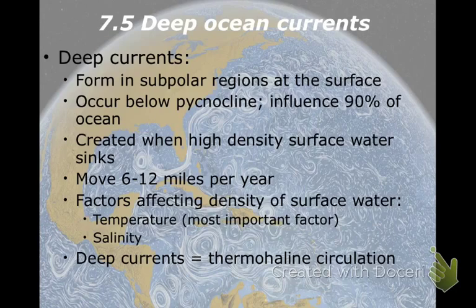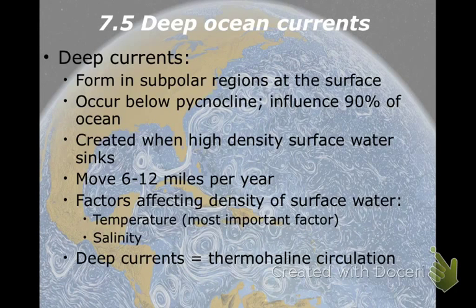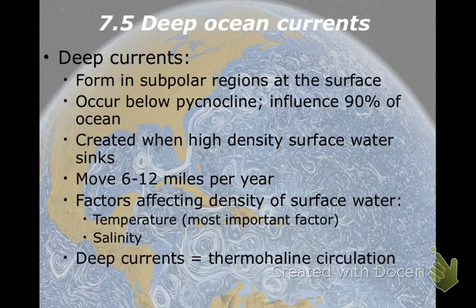Deep currents mostly occur in the subpolar regions of the North Atlantic and all around Antarctica. We're going to talk farther on about why they don't occur in the North Pacific. What happens is you have higher density water that forms at the surface and it sinks, or downwells. This starts the water on the bottom moving. It doesn't move very fast — on the order of 2 to 3 centimeters per second for the fastest deep ocean currents.